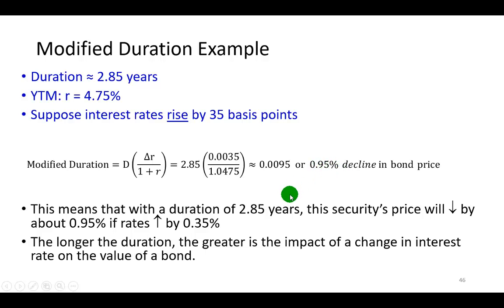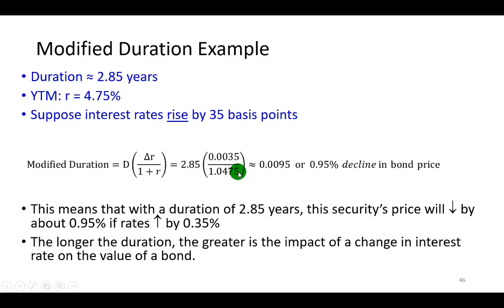So in essence, with a duration of 2.85 years, this bond's price is going to go down by about 0.95% if interest rates were to increase by 35 basis points. That tells you that if the duration of this bond were greater — say, 4 — multiplying by that quantity is going to result in a larger percentage price change. Therefore, once again, the longer the duration, the greater is going to be the impact of a given interest rate change on the value of that bond.